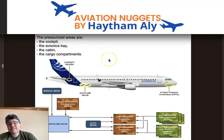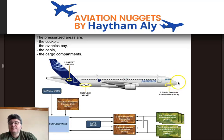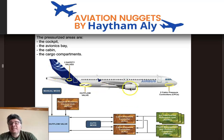The pressurized areas inside the Airbus A320 single aisle family are the cockpit, the avionics bay, the cabin, and the cargo compartment. The unpressurized areas are the area forward of the forward bulkhead beneath the nose, the tail cone and APU compartment behind the aft bulkhead, and the main landing gear wheel area.